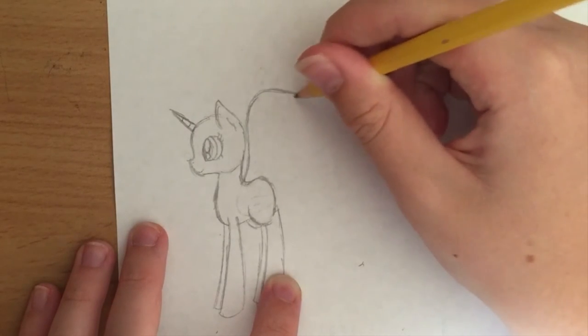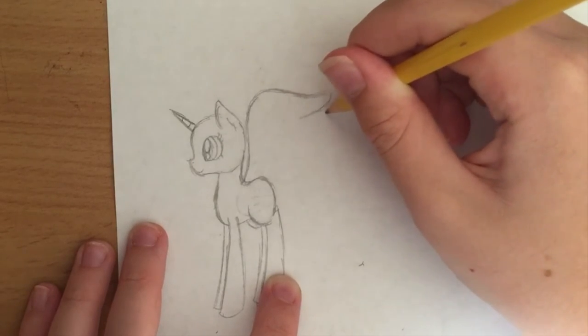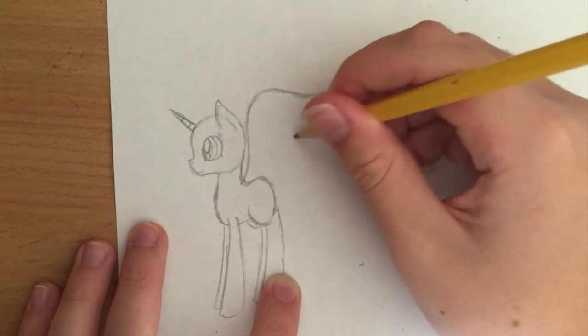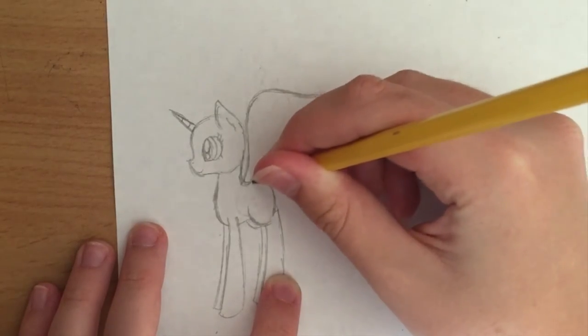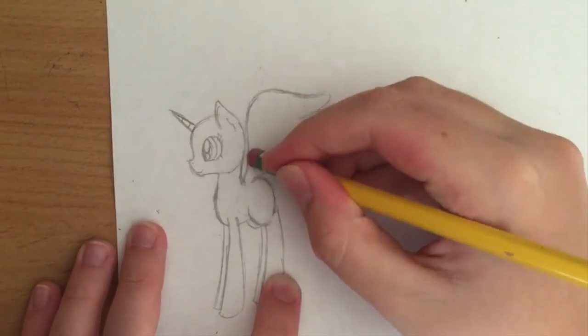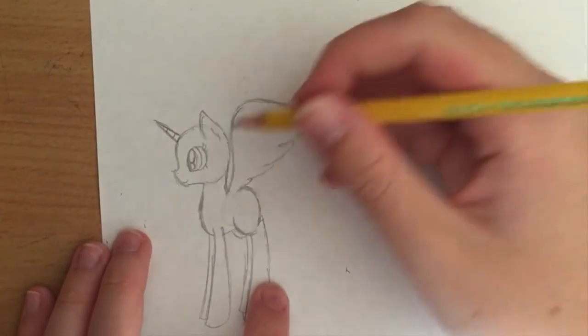And alicorns have a lot more feathers, so make some more feathers like that. And again, erase where it connects to the body, and then you want to make a nice large bone in the wing and fill in the inner feathers.